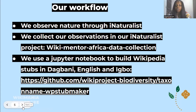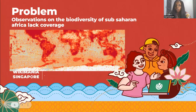We use our Jupyter notebook to build Wikipedia stubs in Dagwani, English, and Ewe. The essence of creating stubs in these languages is because biodiversity coverage in sub-Saharan Africa in general is limited — we have underrepresentation of that. Anyone can start with it and try to create a Wikipedia article or Wikidata entry, and we promote it.